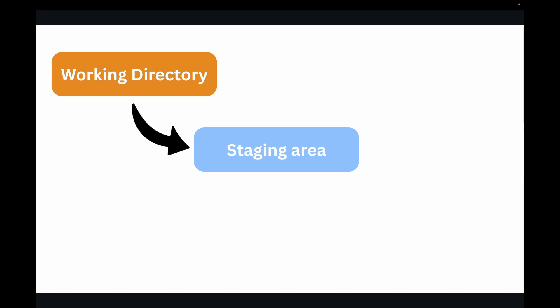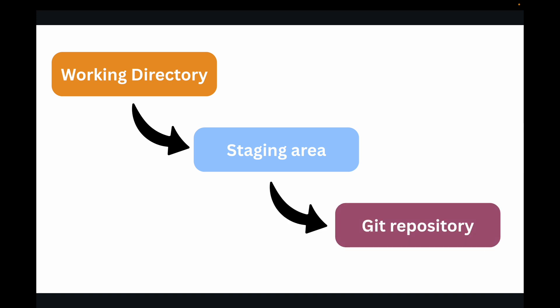In the staging area you choose which changes you want to include in your next save point. Then you have the Git repository, which is your .git directory. This is where Git stores your project's complete history, including all the permanent snapshots — your commits. Once changes are here, they are safely recorded.